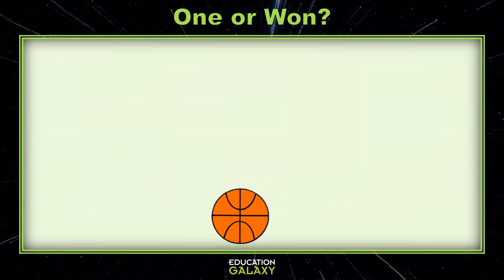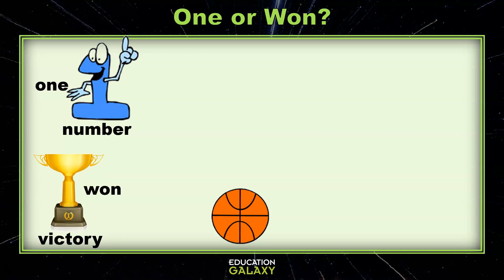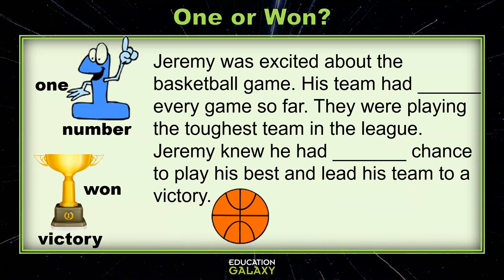'One' or 'won': O-N-E is the number one. W-O-N is a victory, such as 'you won the game.' Now let's look at our paragraph: Jeremy was excited about the basketball game. His team had won every game so far. They were playing the toughest team in the league. Jeremy knew he had one chance to play his best and lead his team to a victory. Let's think about that first sentence — which 'one' goes in that blank?